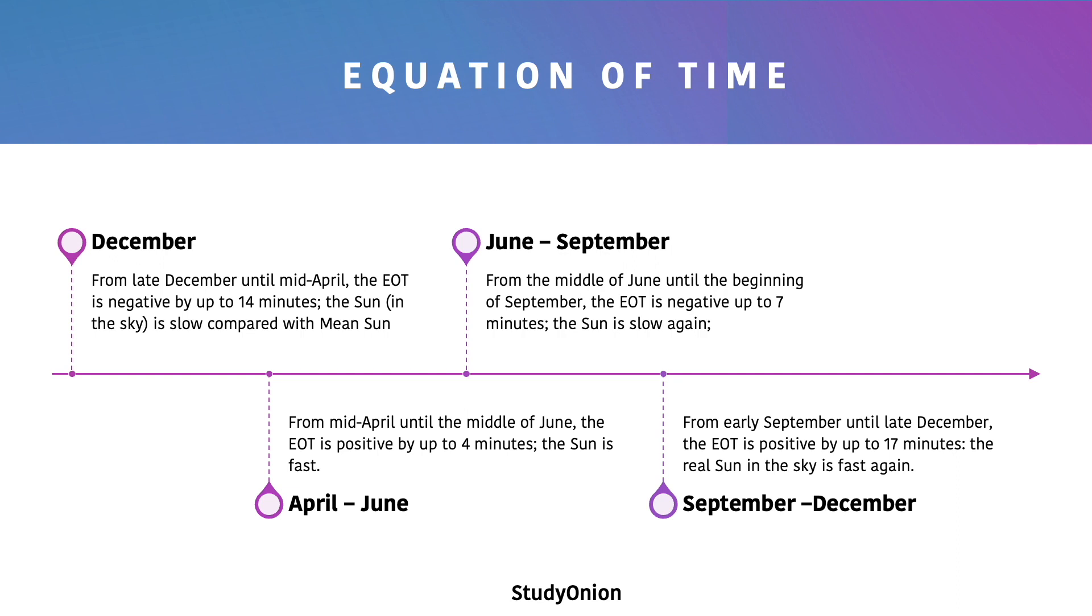From April to June, from mid-April to about the middle of June, the EOT is positive by four minutes. That just means that the real sun is fast.